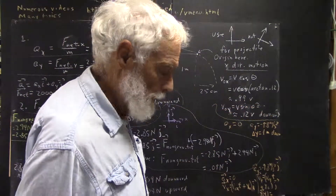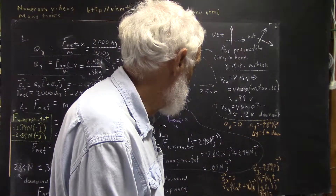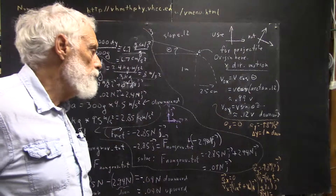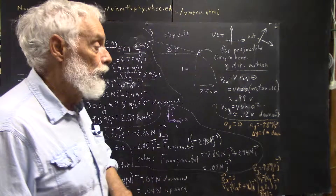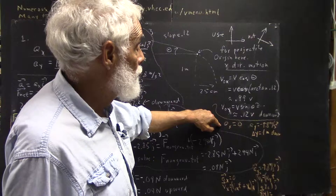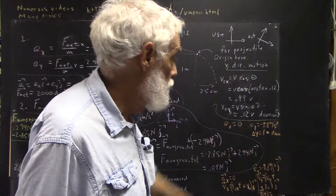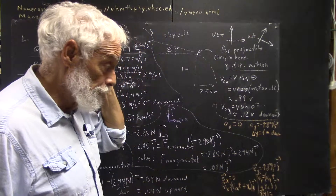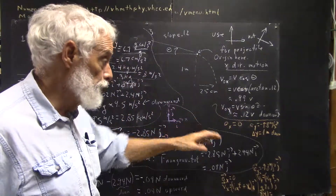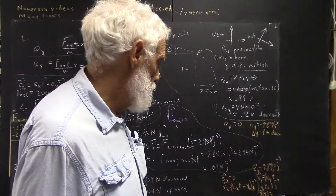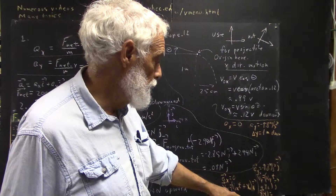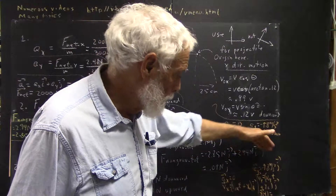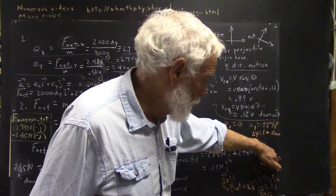Similarly, your y equation is going to involve both v and sine theta. You know how far you fall — one meter down — you know your acceleration, you have an expression for your initial velocity, and you know your displacement. So you know enough to express everything in terms of v and sine theta, and you can put those two expressions for time together to eliminate either v or theta.